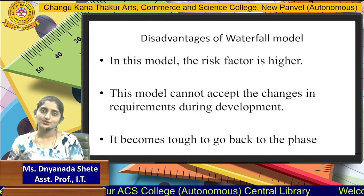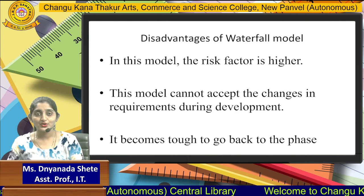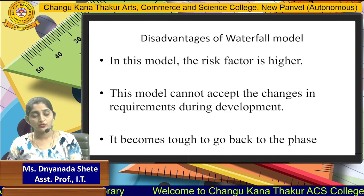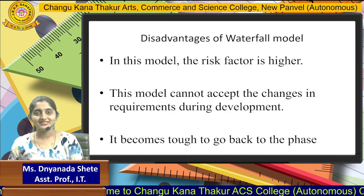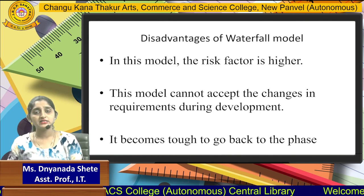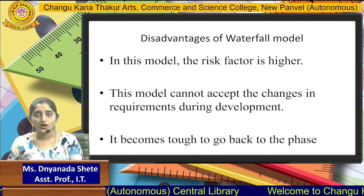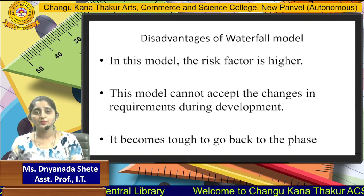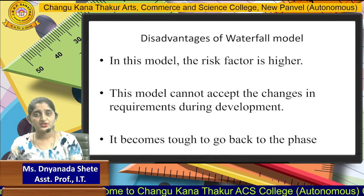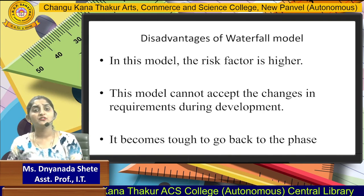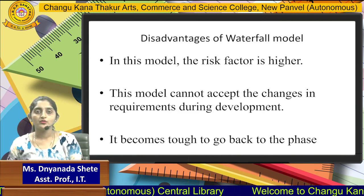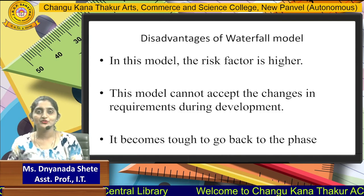There are some disadvantages of the waterfall model. The risk factor is very high because this model is only linear and sequential — only forward direction, not backward. So if one phase is completed, you cannot go back. This model cannot accept changes in requirements during development. Once requirements are completed and you move to the next phase, changes cannot be accepted, making it very tough to go back to previous phases.